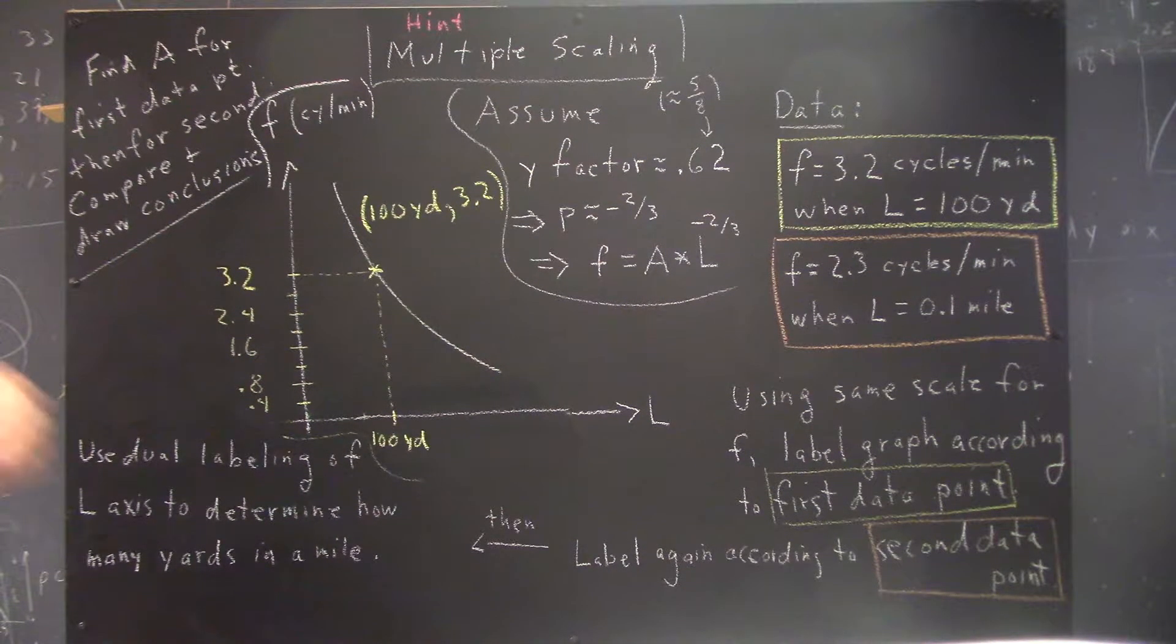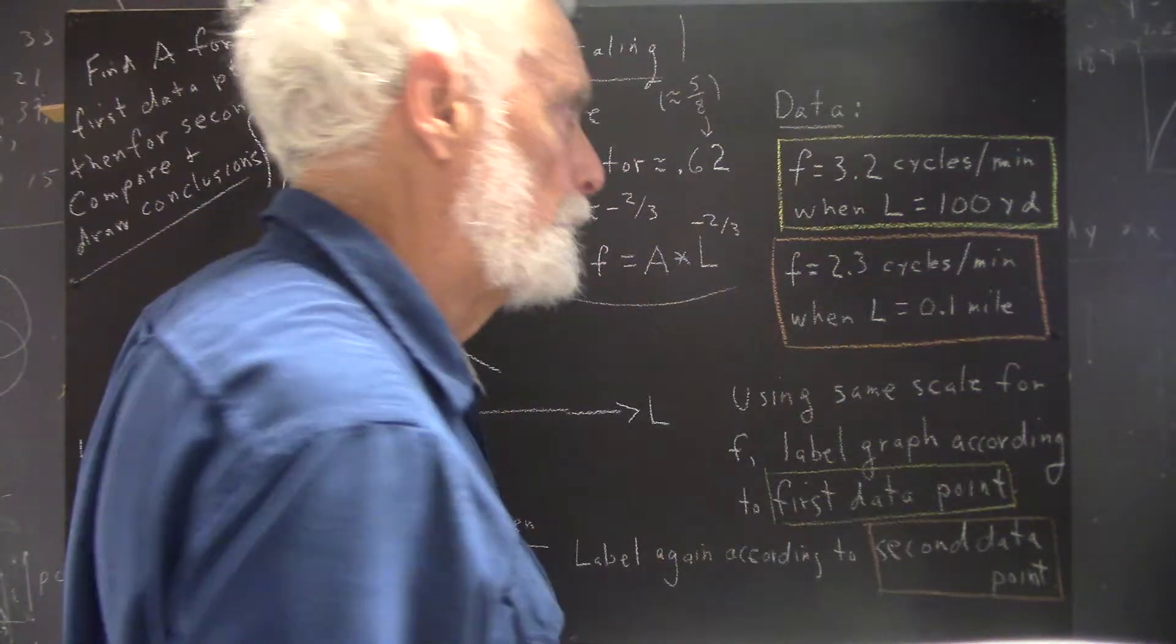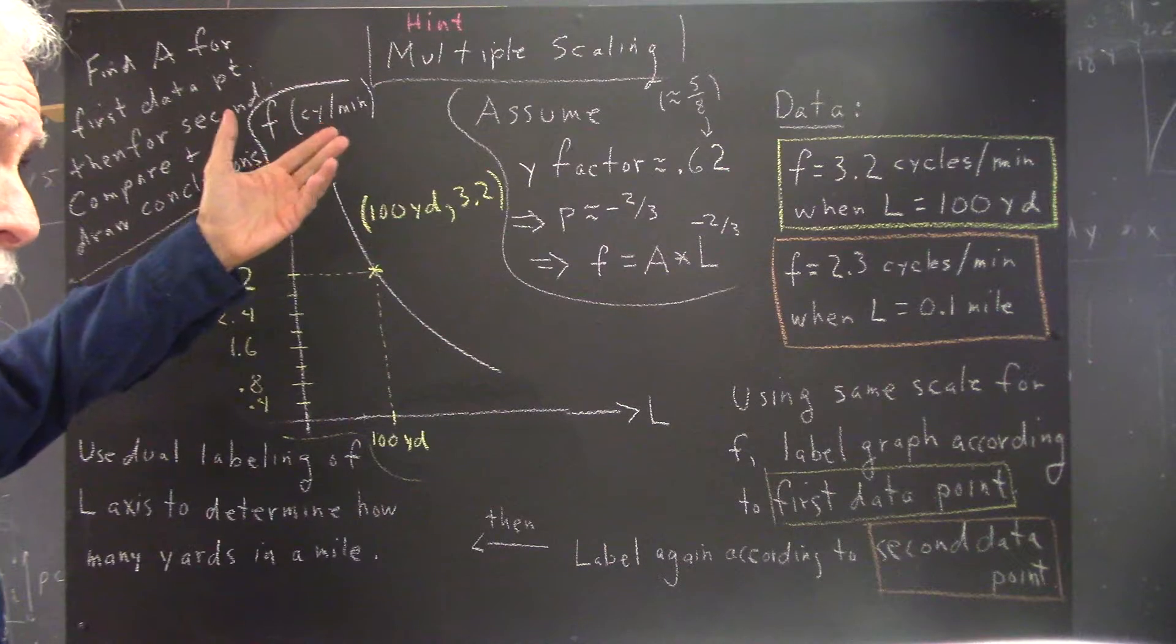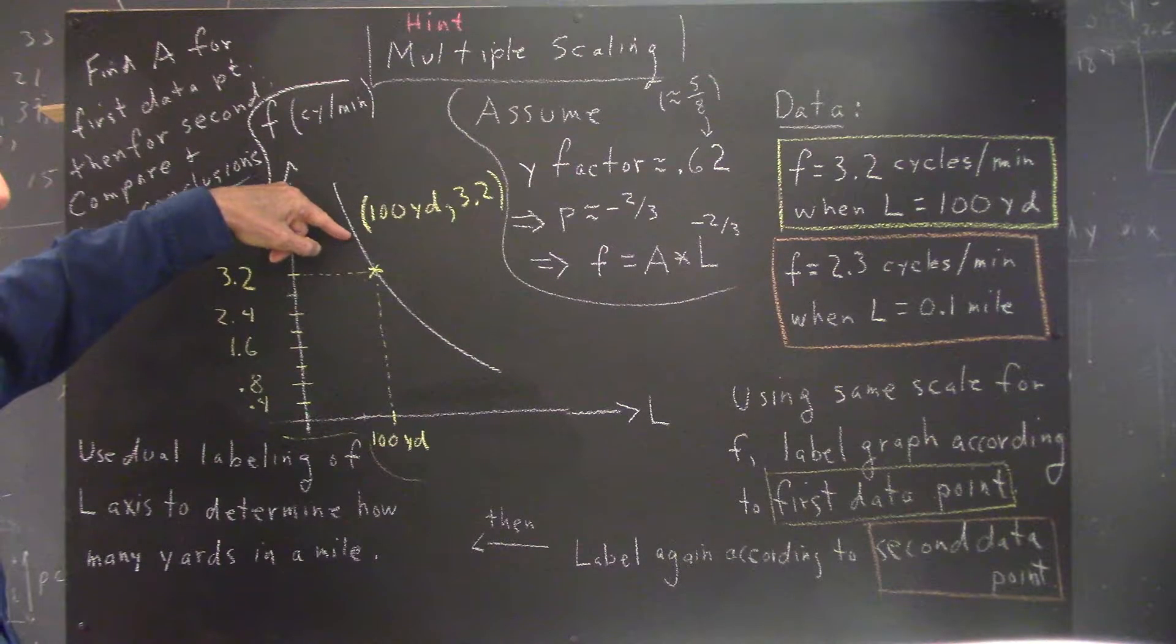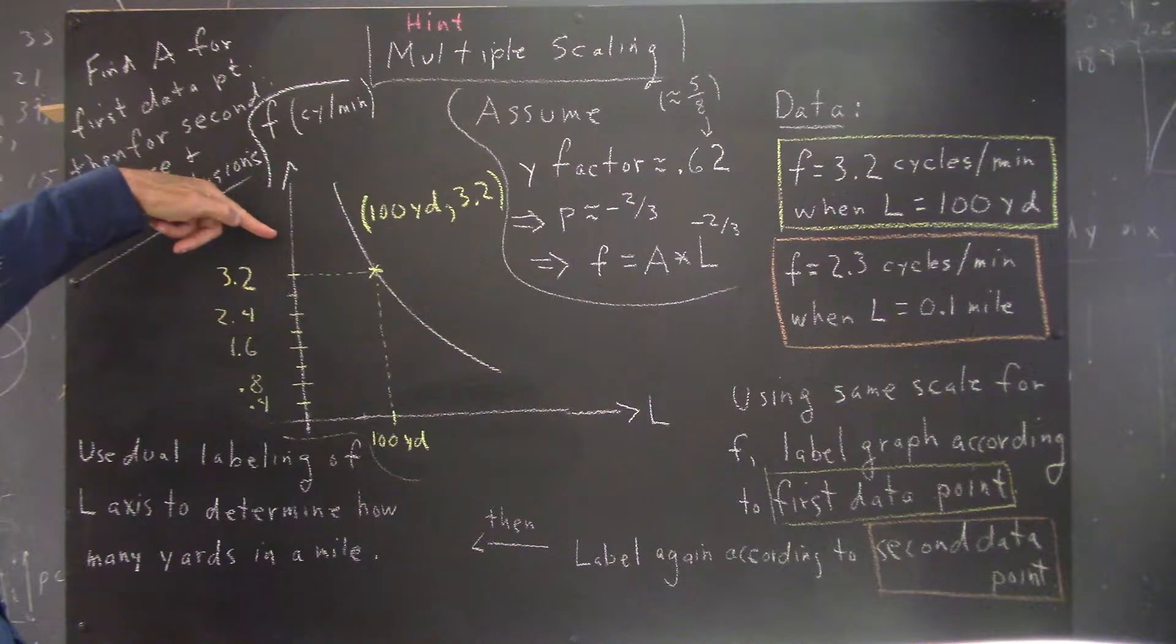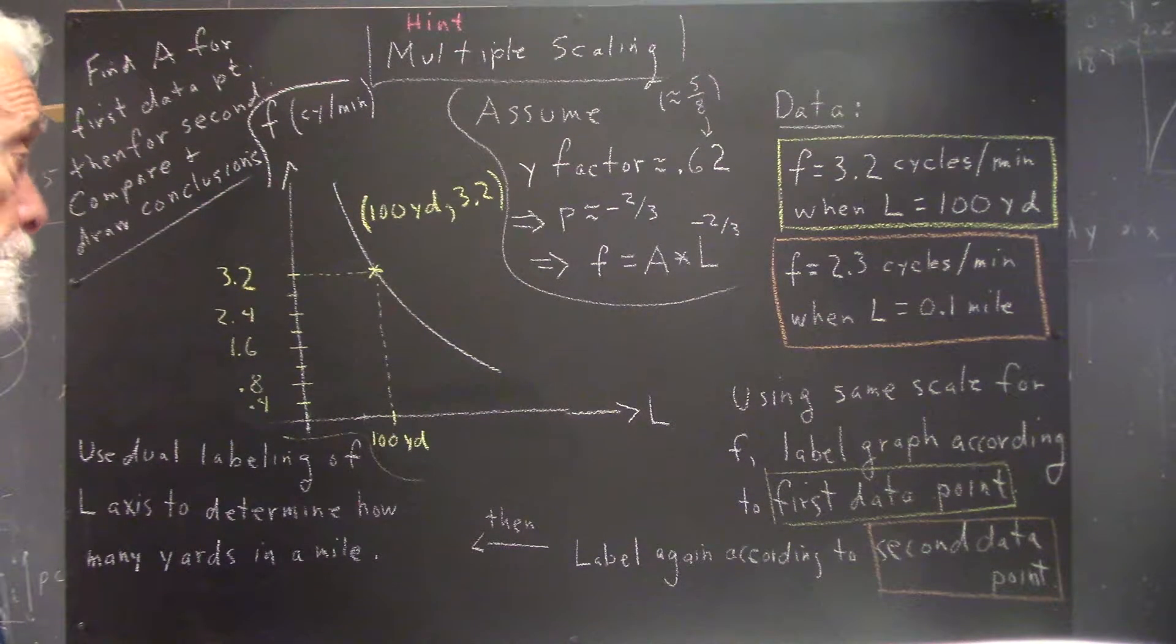Now, where are we going to put this data point? It should be obvious to you now, but let's just be sure we understand. Can I just pick any point? Can I put it here? Well, I can't put it here. Why not? Because here corresponds to a frequency that's more than 3.2 cycles per second.